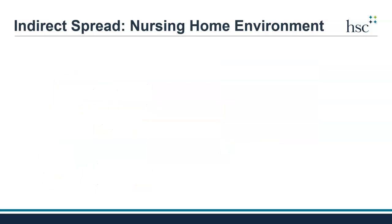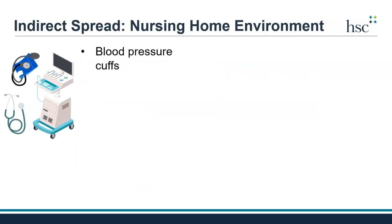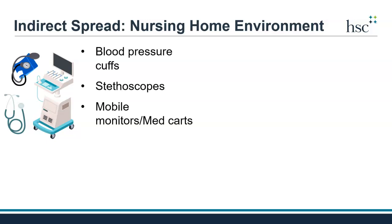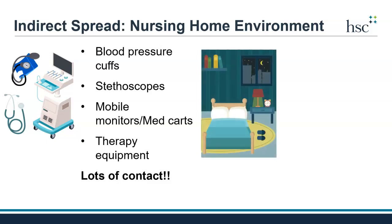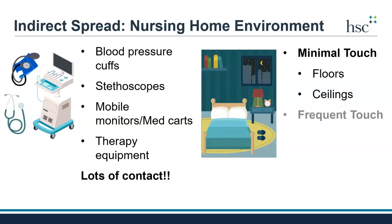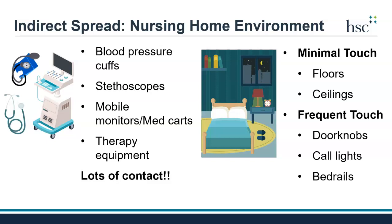Resident care equipment includes items such as blood pressure cuffs, stethoscopes, mobile monitors, and medication carts, as well as therapy equipment like wheelchairs and walkers. These surfaces are usually touched by many people throughout the day, so there are many opportunities for germ spread. Household surfaces include those that are not touched as often, such as ceilings and floors, so germ spread from these surfaces, while possible, may be more limited. But household objects and surfaces that are touched frequently, such as doorknobs, call lights, and bed rails, can easily contribute to germ spread.